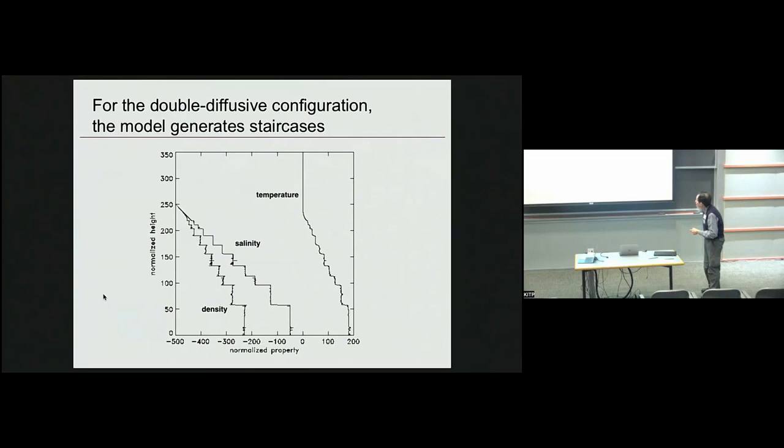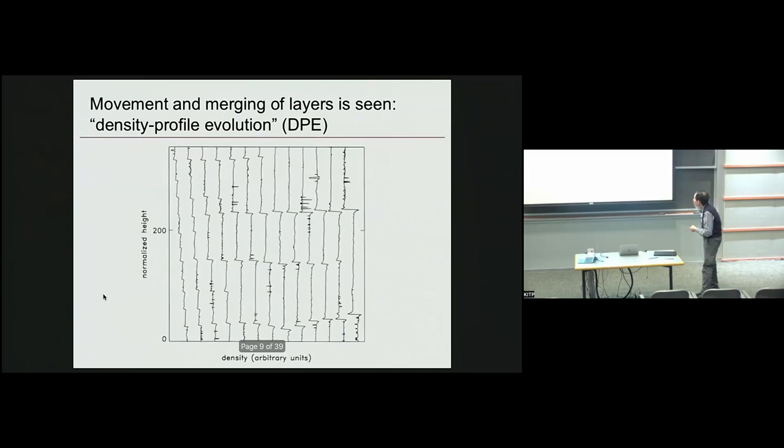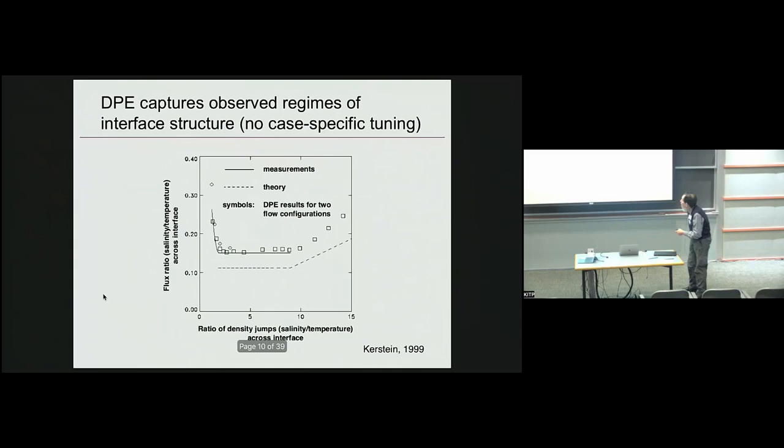Here's what we get. Here is a staircase. You can see, if you look at the density, density and salinity contributions to temperature, but for the total density, you can see these little overhangs that end up representing the mechanism that I described. Here it just gives you flavor of the evolution, like a time sequence of those profiles, just to show that the layers can move, merge, and so on.